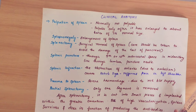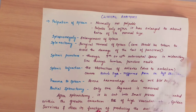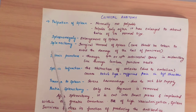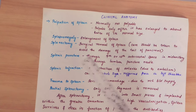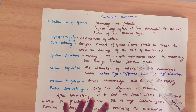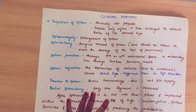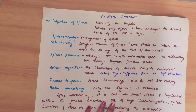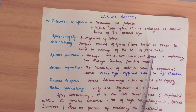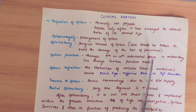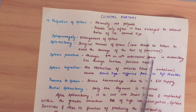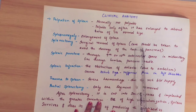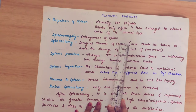Next is splenectomy — we can remove the spleen surgically. During splenectomy, we must take extra care because the tail of the pancreas lies close to the spleen. If the surgeon is not careful, the tail of the pancreas can be damaged, which would injure the islets of Langerhans.